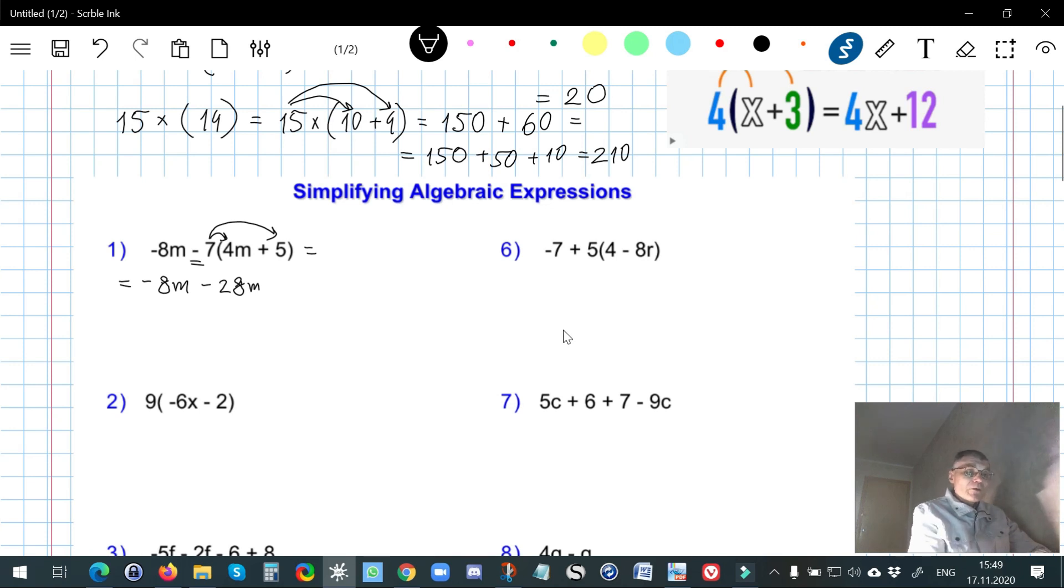And negative 7 multiplied by 5 is negative 35. And then I combine and gather together like terms, in this case it's m. I have to calculate how many m's there are. To do that I have to add negative 8 to negative 28. I get negative 36, don't forget about m, and minus 35. That's it, that's the answer, we can't do anything else.